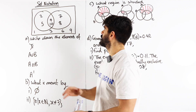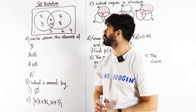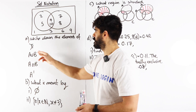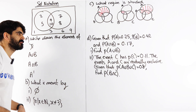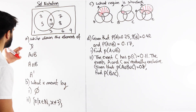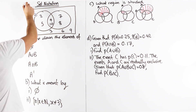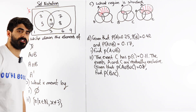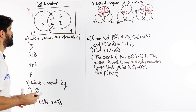I've got this Venn diagram here — I've just put some numbers in random places from 1 to 10. I want you to write down the elements of this. Now this is just the Greek symbol Xi. However you refer to it, it basically just means the set. Just think of it as a posh S. So write down the elements of the set.